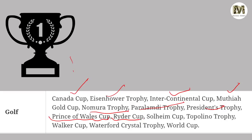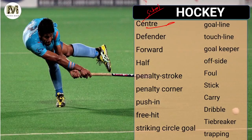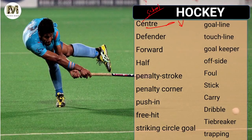Hockey — I have also played hockey in school times. I was left midfielder. Please comment which games you have played, past or present. Hockey terms: Center, Defender, Forward Half, Penalty Stroke, Penalty Corner, Push In, Free Hit, Striking Circle Goal, Goal Line, Touch Line, Goalkeeper, Offside, Foul, Stick, Carry, Dribble, Tiebreaker, and Trapping. These are very important words that have been asked in your exam.